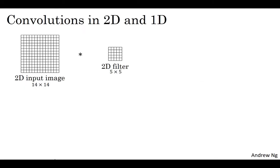In the first week of this course, you learned about the 2D convolution where you might input a 14 by 14 image and convolve that with a 5 by 5 filter. You saw how 14 by 14 convolved with 5 by 5 gives you a 10 by 10 output. If you had multiple channels, maybe 14 by 14 by 3, then it would be 5 by 5 by 3 that matches the same 3, and if you have multiple filters, say 16 filters, you end up with 10 by 10 by 16.